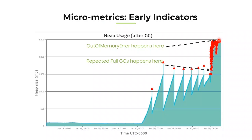One key micrometric to monitor is GC throughput percentage. GC throughput is the amount of time your application spends processing customer activity versus the time spent on GC activity. For example, 98% GC throughput means 98% of time is spent on customer activity and only 2% on garbage collection. During healthy periods the GC throughput might be 98–99%, but when entering the danger zone it starts degrading: 95%, 90%, 85%, 80%, 75%.